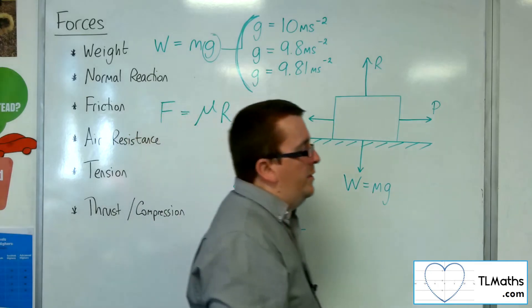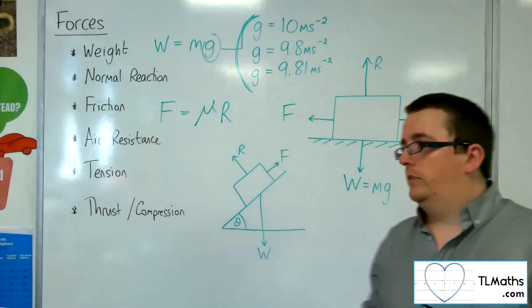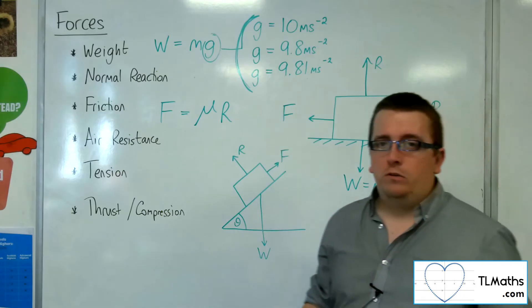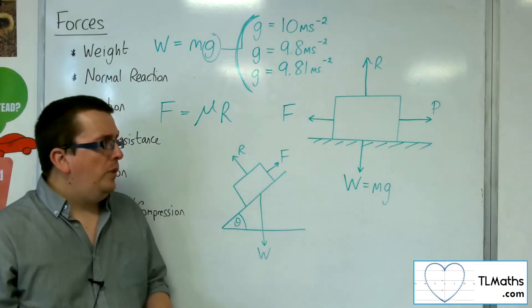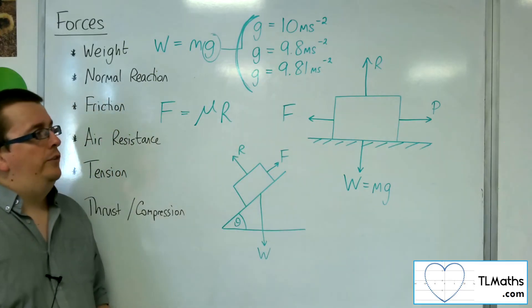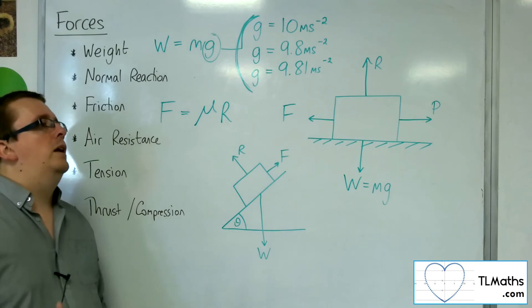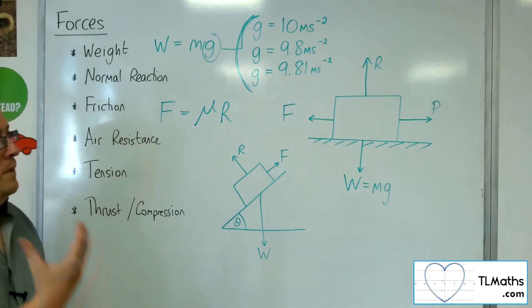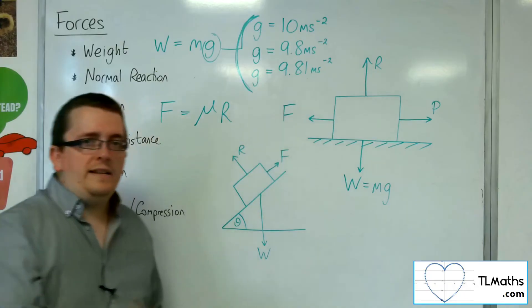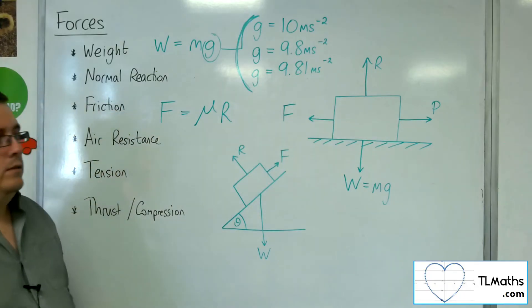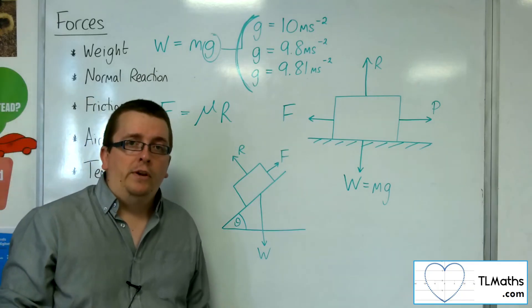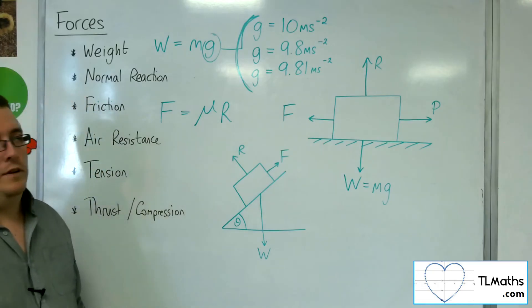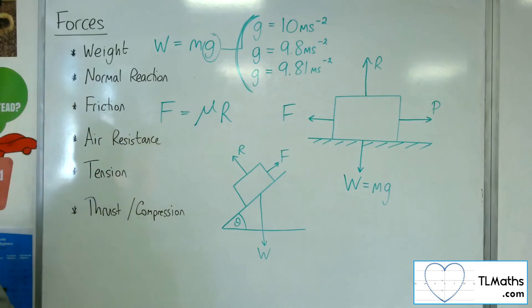Now, another resistive force that we've got to deal with quite often is air resistance. Air resistance, like friction, will work opposite to the direction of motion. Air resistance is ignored if you're dealing with a point mass or a particle. Unless the question specifically says that there is air resistance being included. Of course, if you had a situation where you've got a parachutist, then air resistance has to be taken into account.